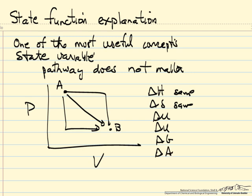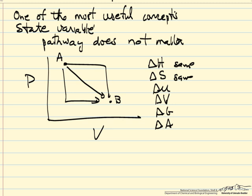So enthalpy change, entropy change, internal energy change, and this was supposed to be delta V, volume change, Gibbs free energy change, Helmholtz free energy change. The change from A to B is independent of the pathway.